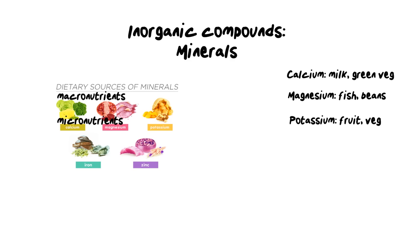Potassium can be found in fruit, vegetables, and grains. Its function is the relaxation of muscles — we want it for the relaxation, not contraction. It's also there for your nervous system and is needed for enzymes in photosynthesis. Iron is often found in liver and meat, but can also be found in beans, peas, potatoes, and green leafy vegetables. It's a really important component, as it's required for the synthesis of hemoglobin, which is needed for our red blood cells. It also forms part of enzymes that make chlorophyll.